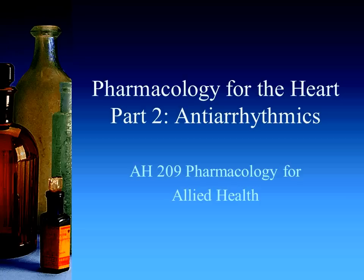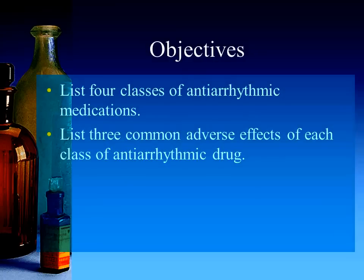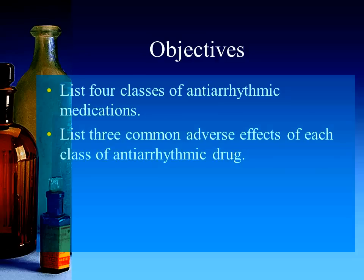Pharmacology for the Heart Part 2 is going to deal with antiarrhythmics. Your objectives for this unit are to list the four classes of antiarrhythmic medications, and you should be able to list three common adverse effects of each of those four classes of antiarrhythmic drugs.